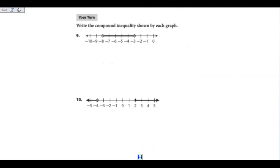So let's try this one, Number 9 on the Your Turn. Write a compound inequality shown by each graph. When I look at this, this is telling me I'm going to use the word AND because it's solid between the two. I have an open circle above the negative 8. I have an open circle above the negative 3. My X is going to be in the middle because it's including both.